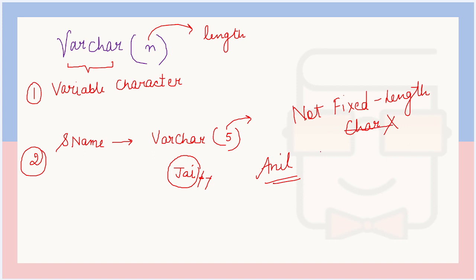The third key point about VARCHAR is its range for n: the value of n can range from 0 to 65,535. So the largest string length that can be stored using VARCHAR is 65,535 characters.